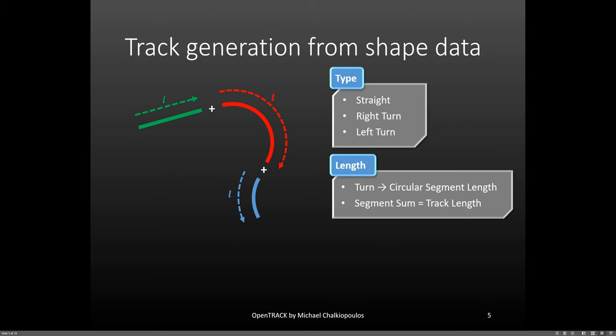Then you define the length of each segment. Obviously the sum of all the lengths of all the segments will be the final track length. Also, whenever you define a turn, the length input should be the length of the circular segment.